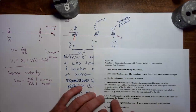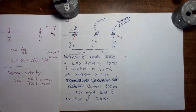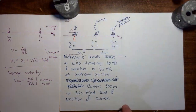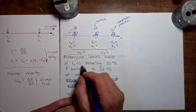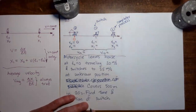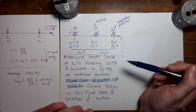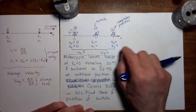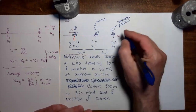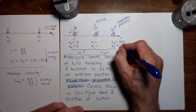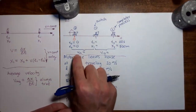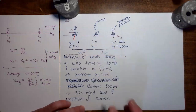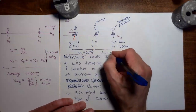Step five: for those variables whose values are known, write them into the diagram. It tells us the motorcycle leaves the house at time zero — we can put that in. We've already decided the origin is here — we can put that in. We don't know the time and position of the switch; that's what the problem is asking for, so we leave those blank. The motorcycle completes the process at time equals 20 seconds and position equals 500 meters. We are also given the velocities: 20 meters per second for the first part and 35 meters per second for the second part.